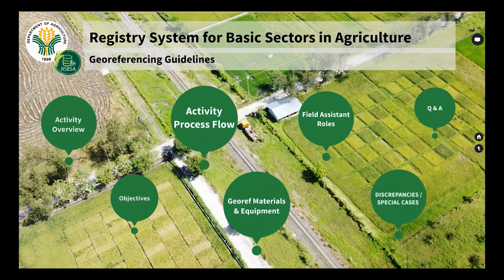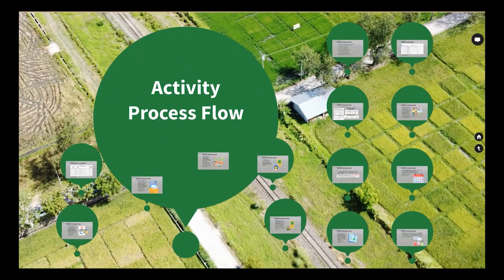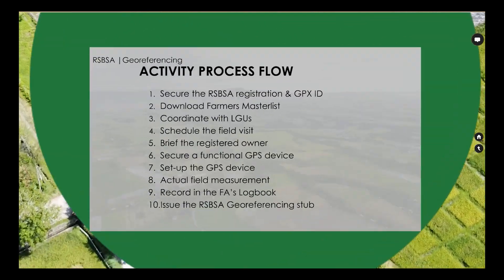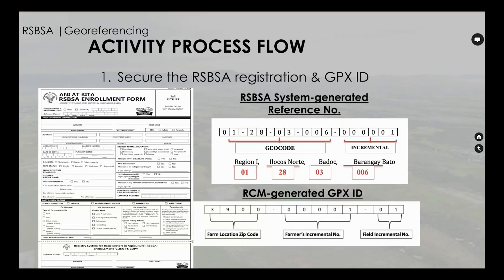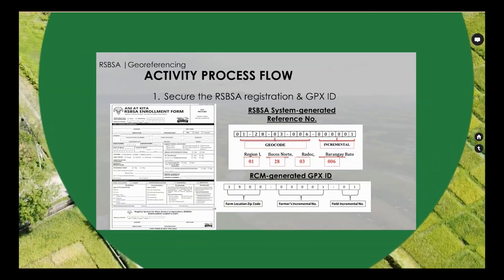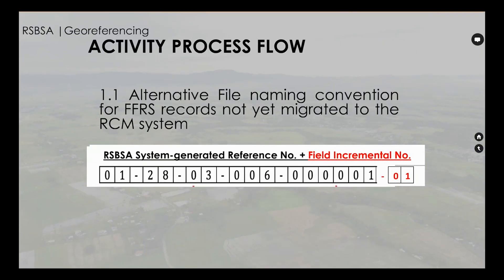Activity process flow number one: secure the RSBSA registration and the RCM-generated GPX ID, which includes farm location zip code, farmer's incremental number, and field incremental number. There is also an alternative file naming convention for FFRS records not yet migrated to the RCM system.